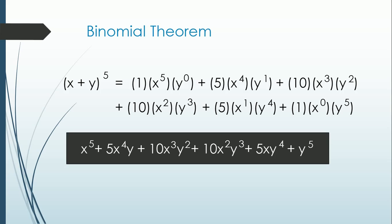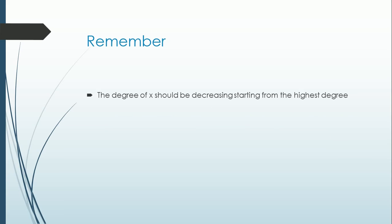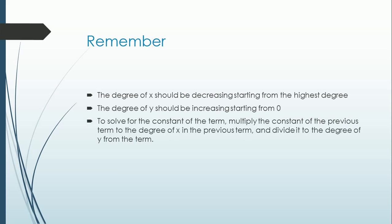In expanding binomials, always remember that the degree of x should be decreasing starting from the highest degree. The degree of y should be increasing starting from 0. To solve for the constant of a term, multiply the constant of the previous term by the degree of x in the previous term and divide it by the degree of y of the current term. The number of terms should always be n plus 1.